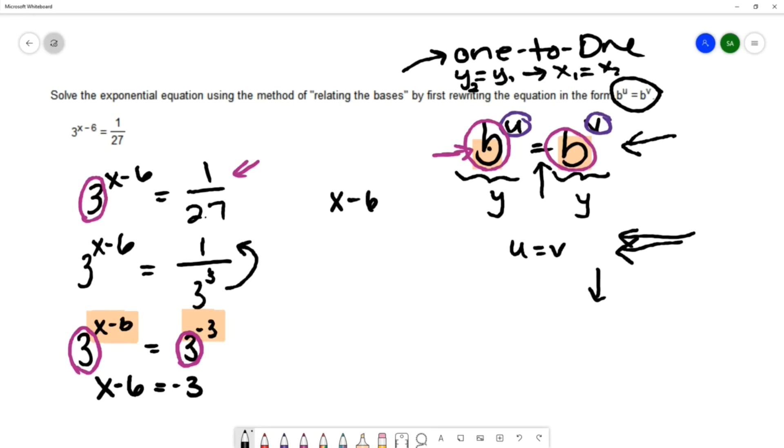x minus 6 equals negative 3 is a linear equation. I'll add 6 to both sides and get x equals 3. So we have the solution to our equation being 3.